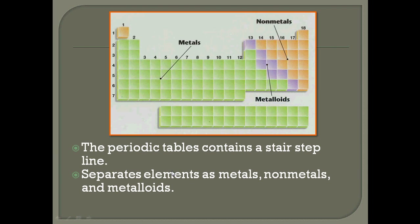Make sure you have your guided notes out. We will be finishing the periodic table notes today. If you remember, the last time we did notes, we discussed both groups and periods, and then we color-coded a periodic table, which showed you where metals, nonmetals, and metalloids are located. Today we're going to talk about the physical and chemical properties of metals, nonmetals, and metalloids.